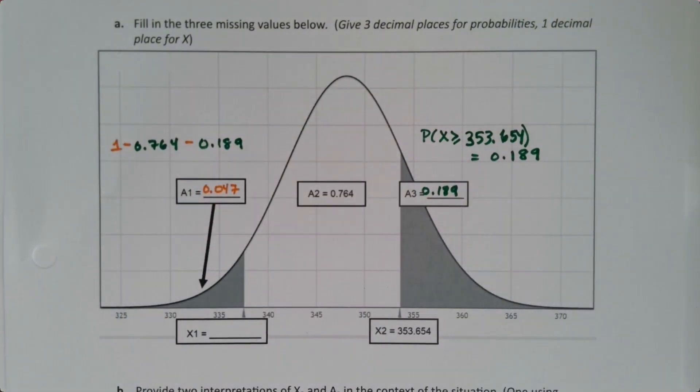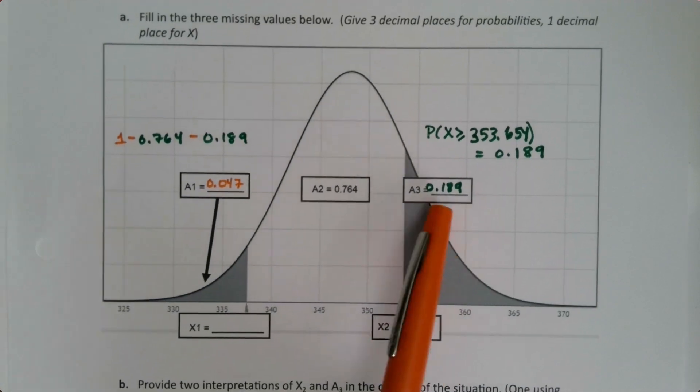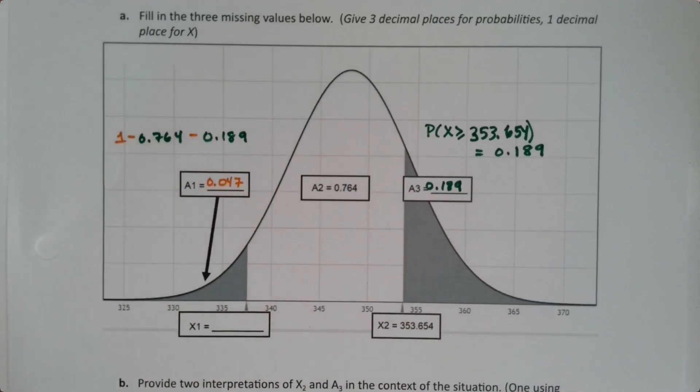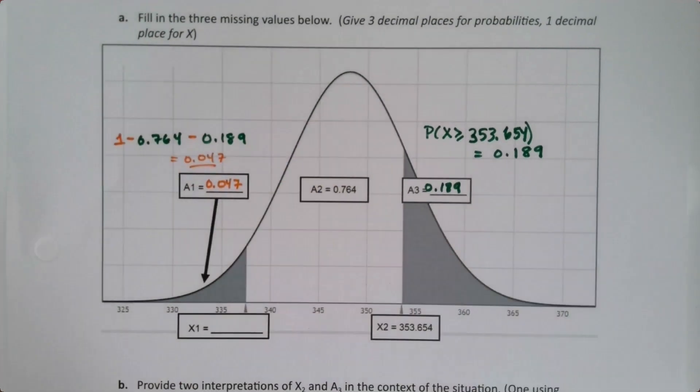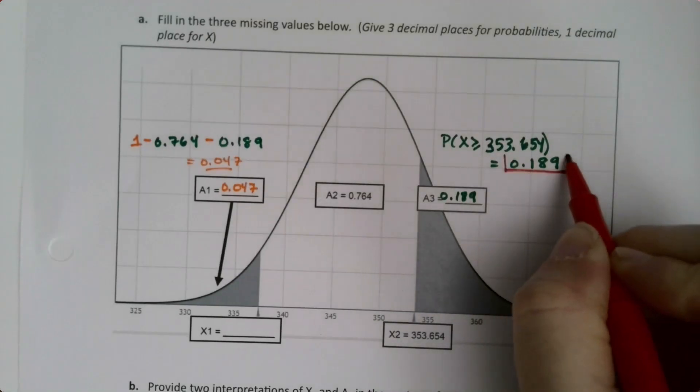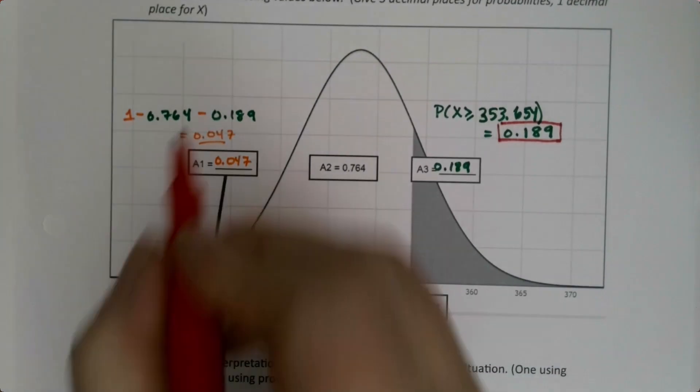So now I know that this is 0.047. That's the answer. And I know 0.189 is the answer. This part and then this part's the answer.